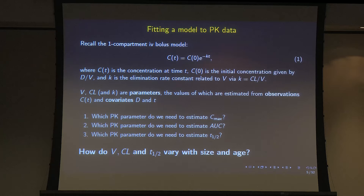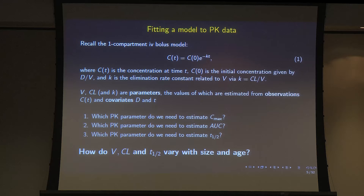I want you to think about some pharmacokinetic data — concentrations measured over time — and recall the one-compartment IV bolus model. It's a mathematical model we fit to data so we can predict useful things: the maximum concentration Cmax, the overall exposure AUC (the integral of the curve), and if we want to know about dose frequency, the half-life. The concentration at some time is given by the initial concentration multiplied by e to the minus kT — an exponential decay with an elimination rate constant.